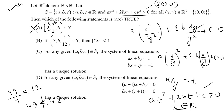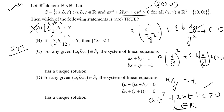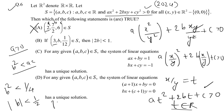Ab Option B check karte hain. Option B mein a = 3 hai, matlab a > 0 sahi hai. B² < ac check karte hain: b² < 3/12 = 1/4. Isse |b| < 1/2, yani |2b| < 1 aa jaata hai. Isliye Option B correct hai.